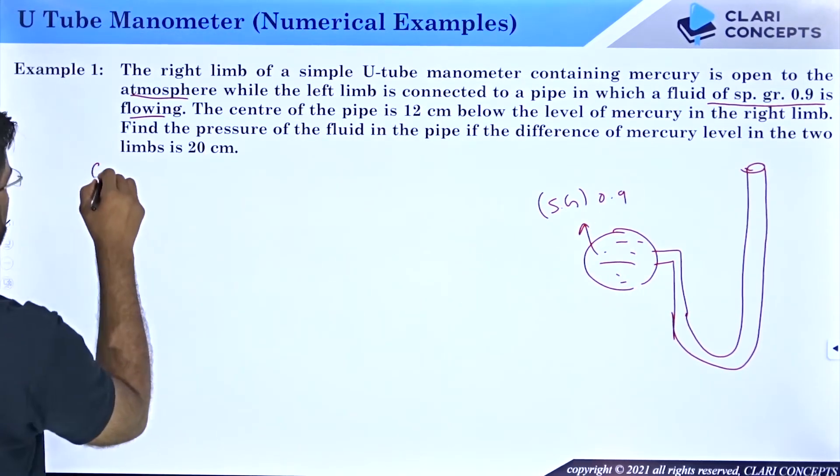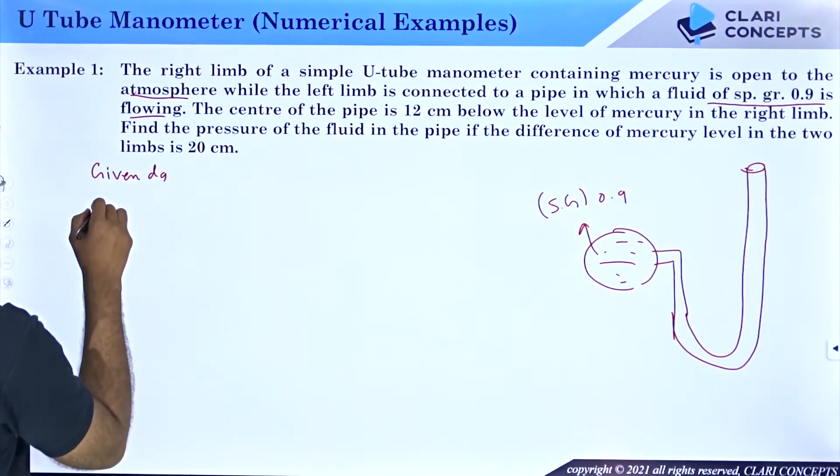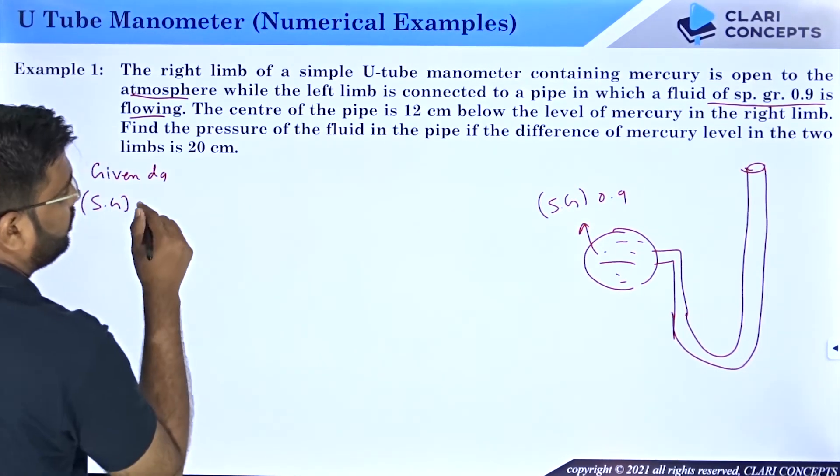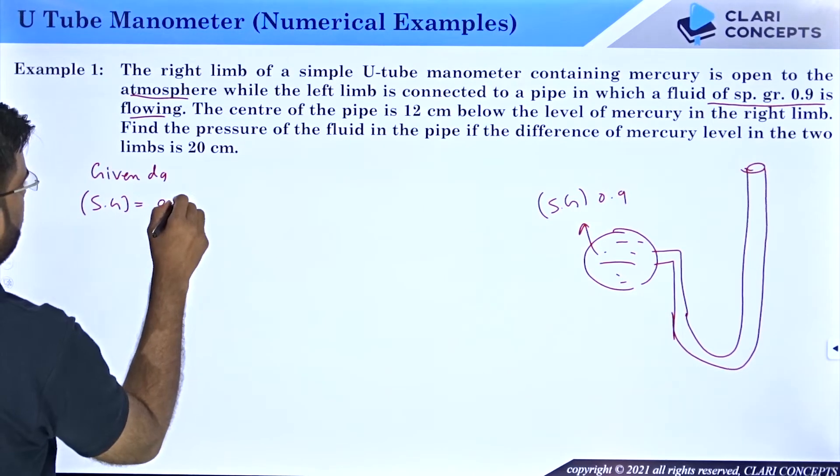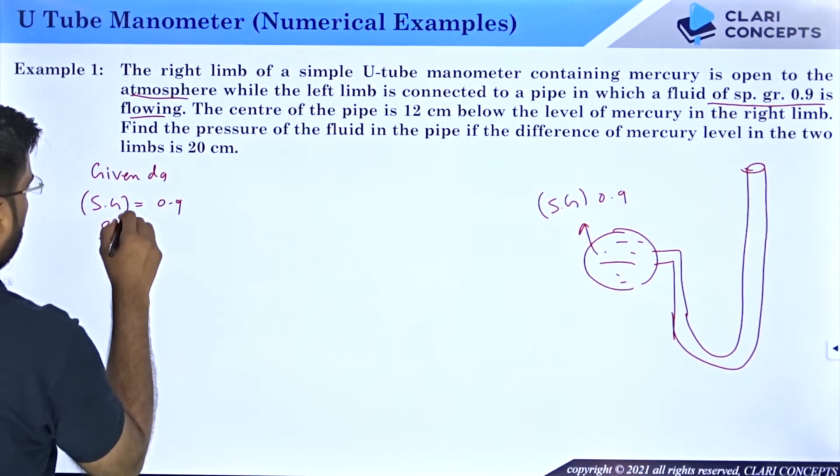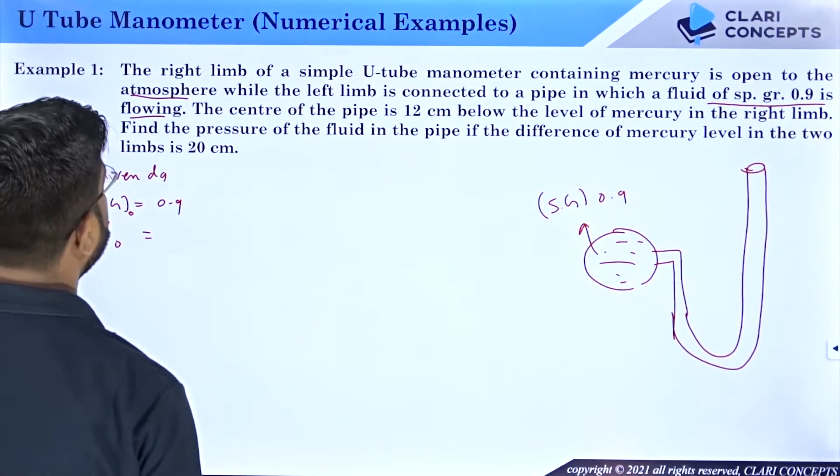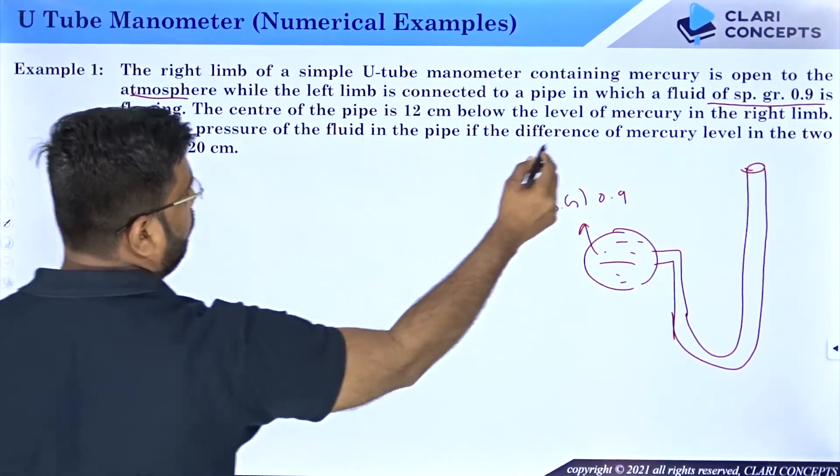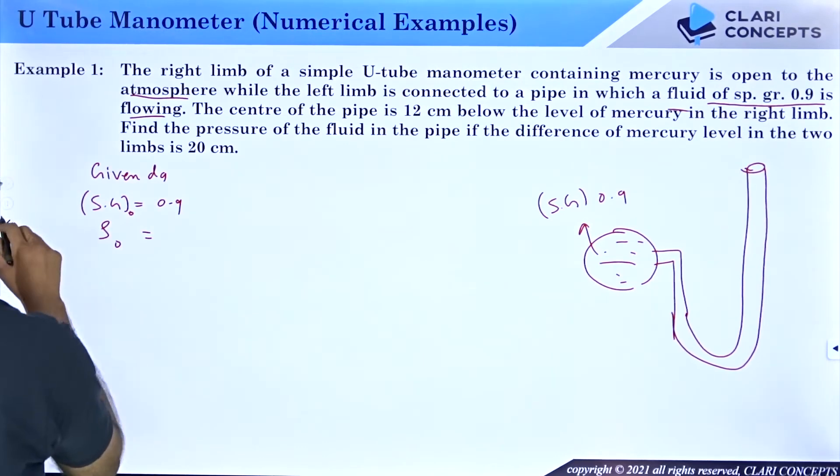I will write the given data. Let us say specific gravity... I think oil is going. It is 0.9. So density of oil will be... Okay, fluid is given, any fluid. So it is not oil as such, it is any fluid.